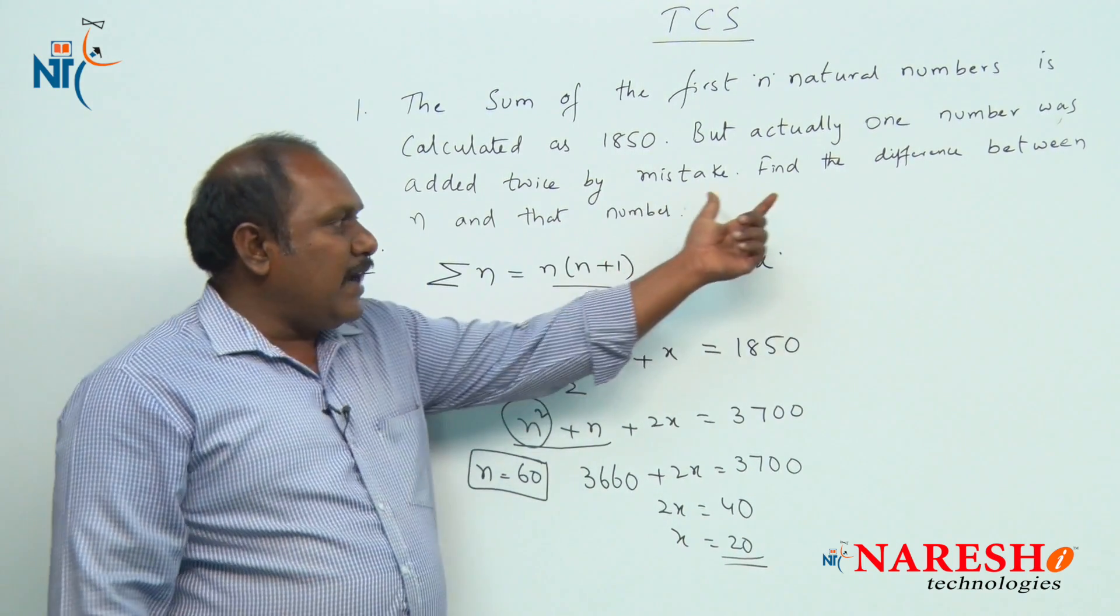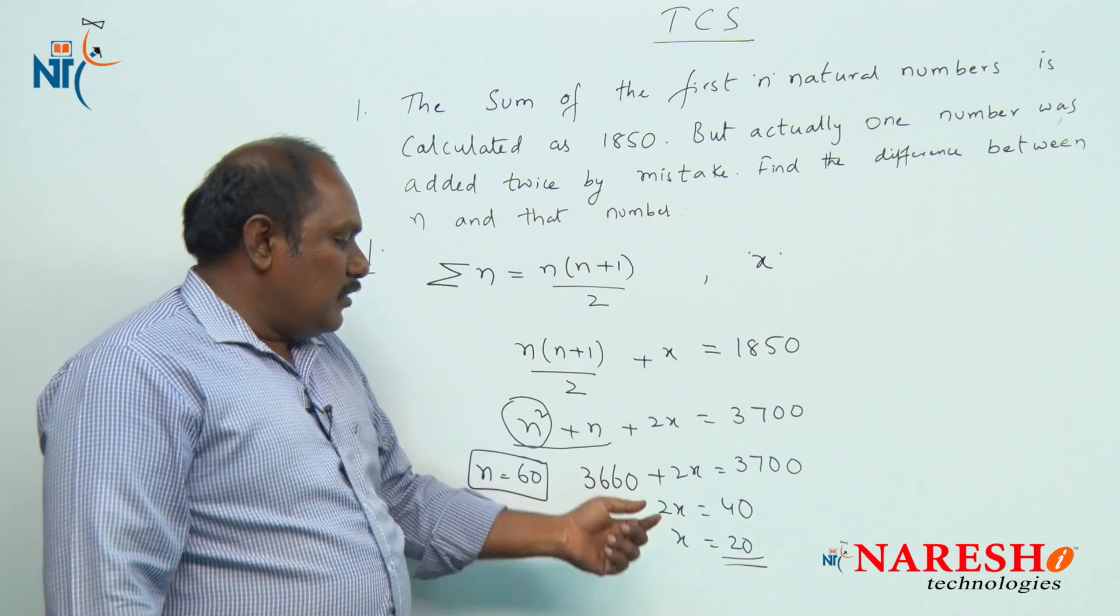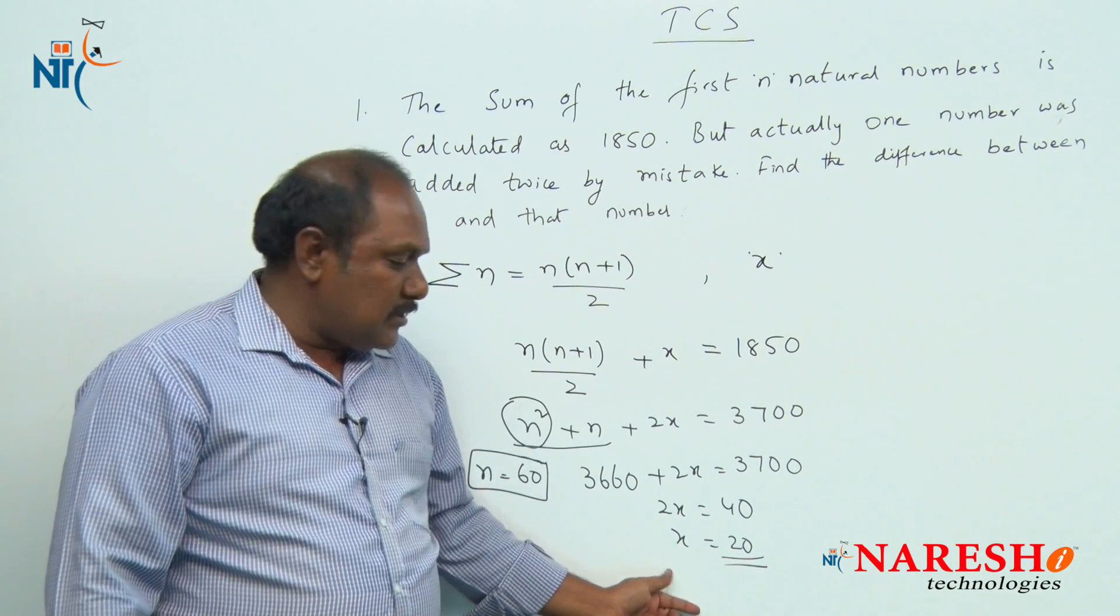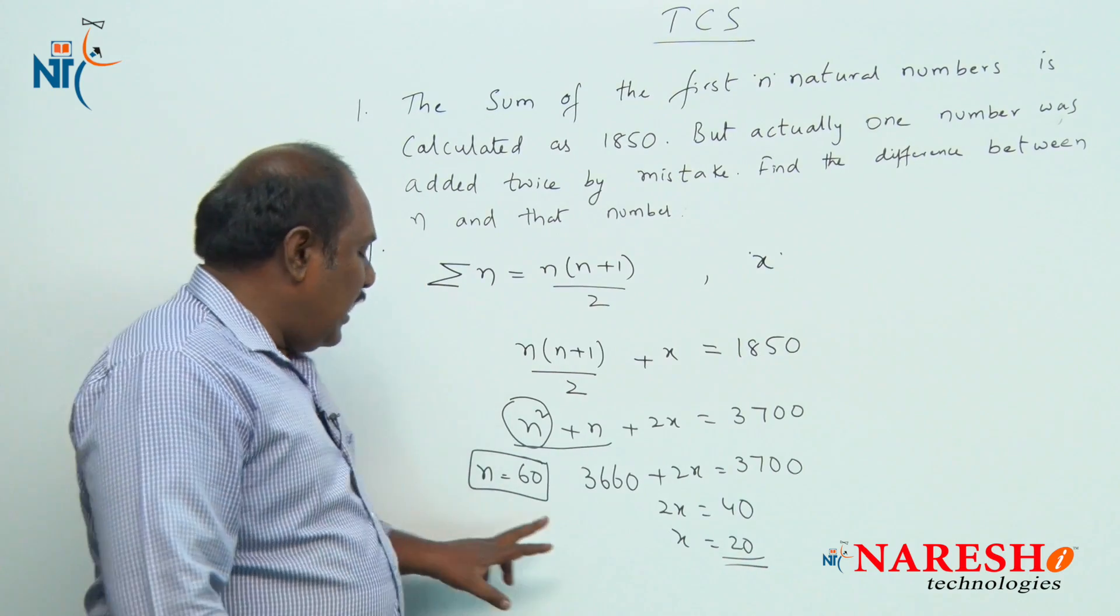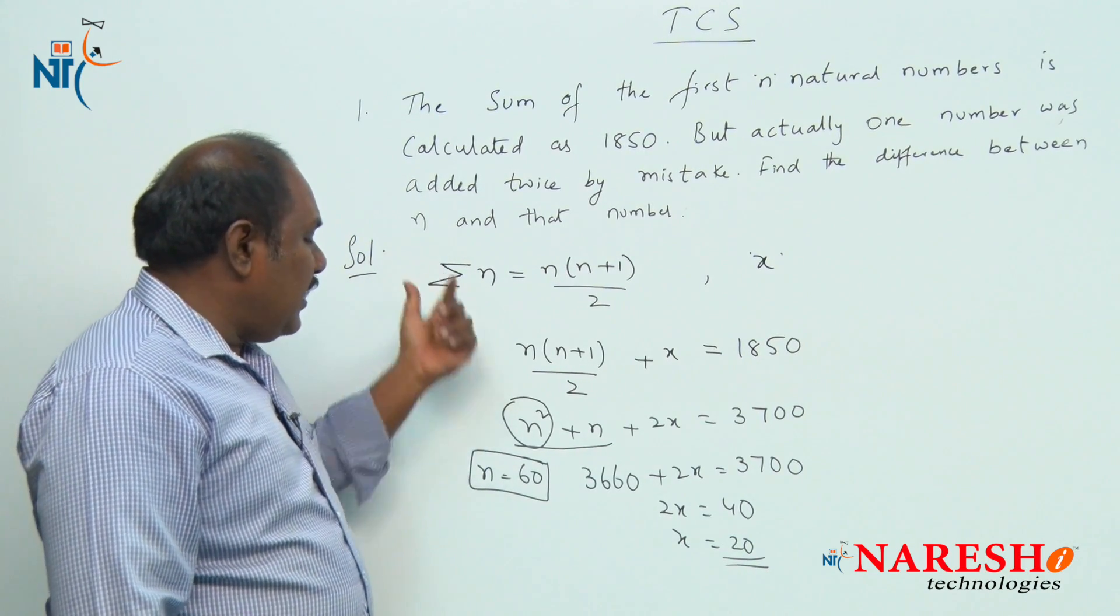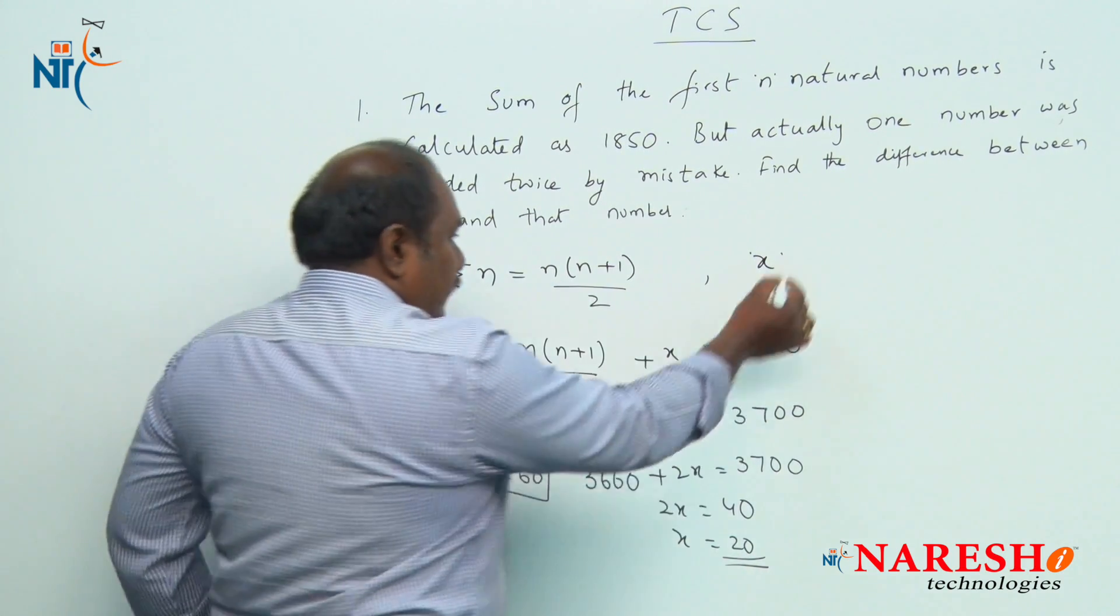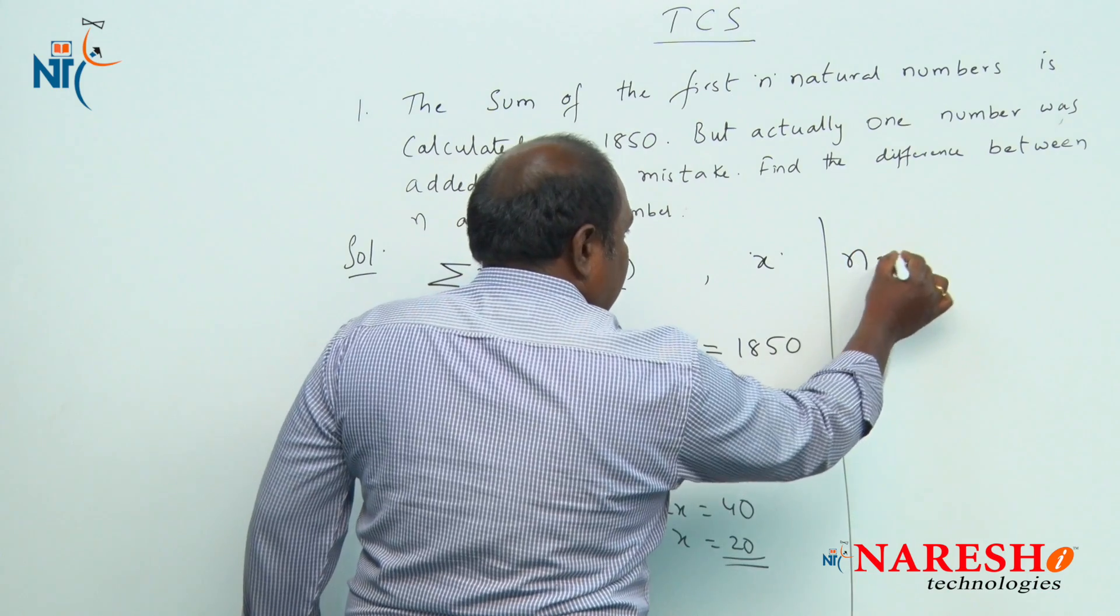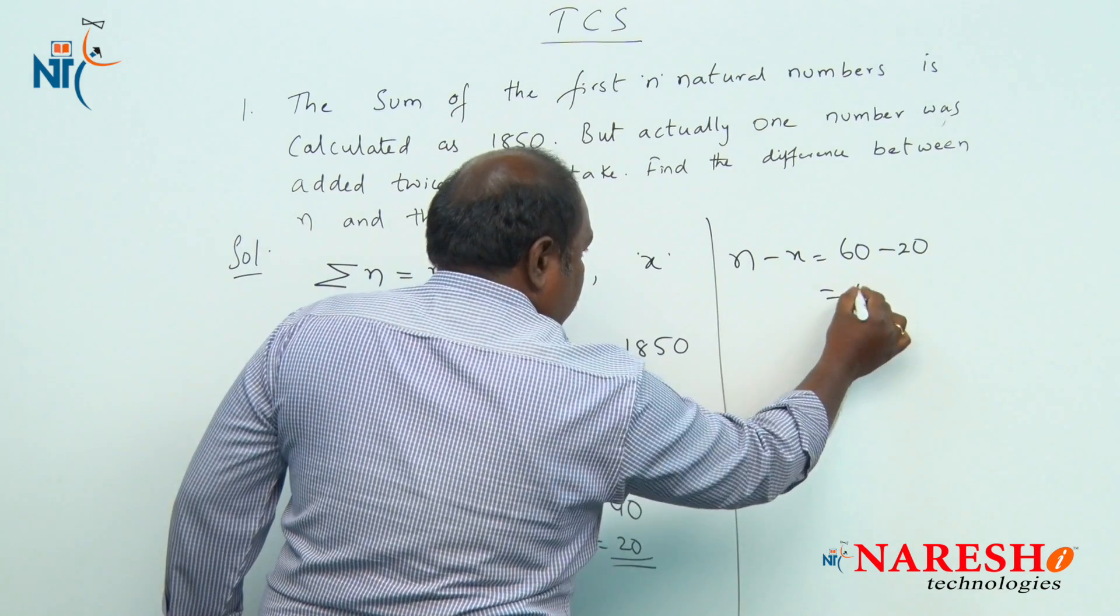The question asks: find the difference between n and that number. The number which is added twice is 20 and the value of n is 60. So the difference of n and x is 60 minus 20.